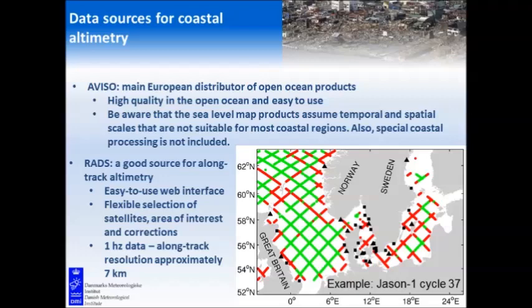Then there is the RADS database — a very nice source for along-track altimetry. That's not a 2D map; it's single tracks. They have an easy-to-use web interface where you can choose which corrections to apply to the altimetry signal, which means you can get a lot more data in the coastal zone. They have all the different satellites, you can choose an area of interest, and it's 1 Hz data — meaning data about every 7 kilometers for Jason.